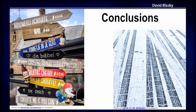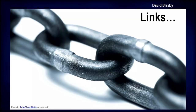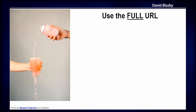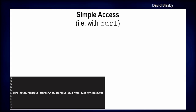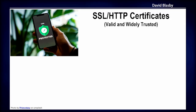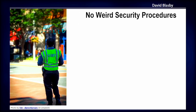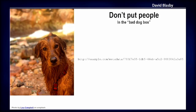Let's summarize with some practical advice. For downloading links: first, use the complete URL — don't make people guess what the service or parameters are; put the full thing in there. Make it simple to download — the easiest test is to use a command line tool like curl to make sure your link resolves and returns XML; don't just copy-paste it into a browser because your browser does a bunch of magic. Make sure your SSL certificates are both valid and widely trusted, and no strange security procedures — testing with curl will catch most of these.